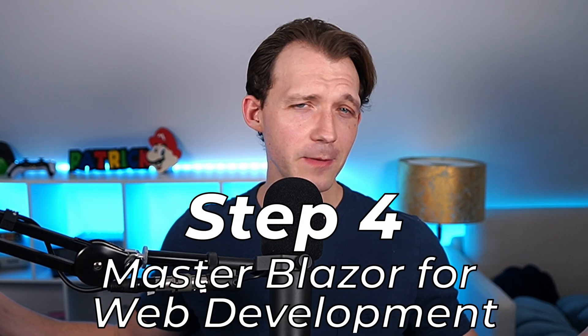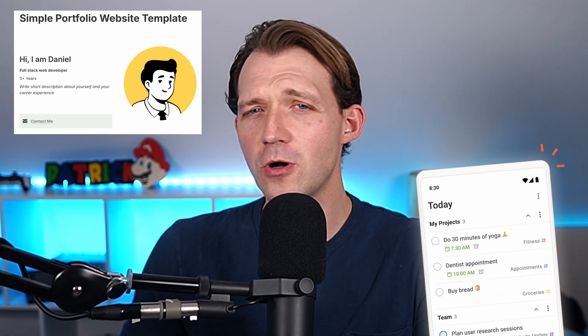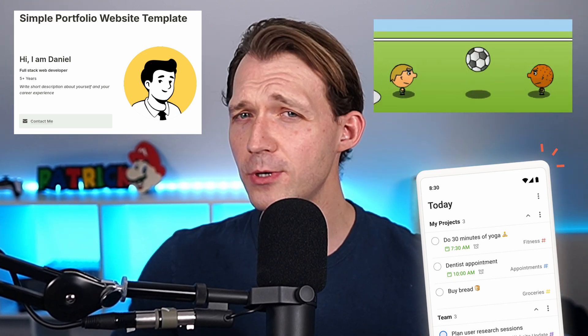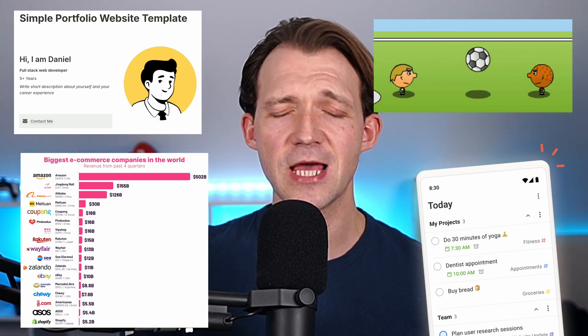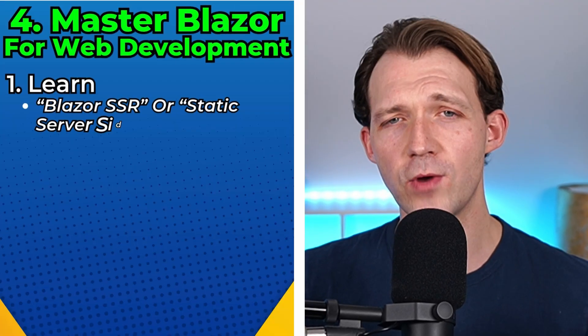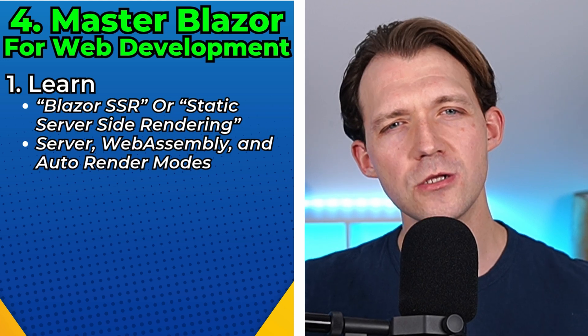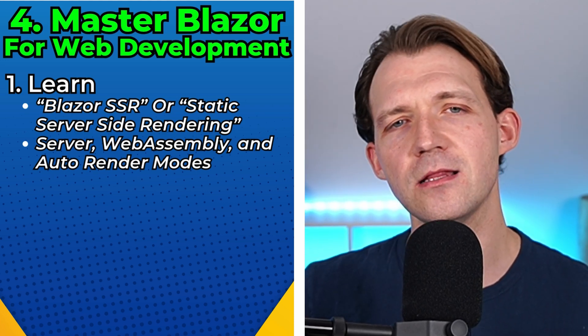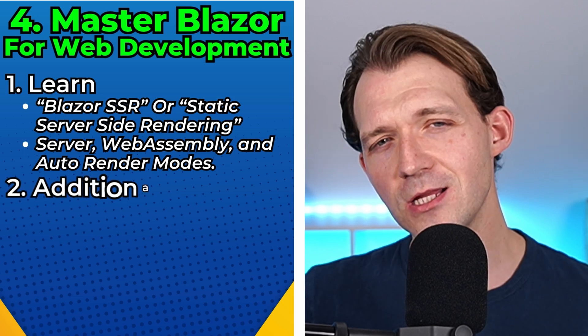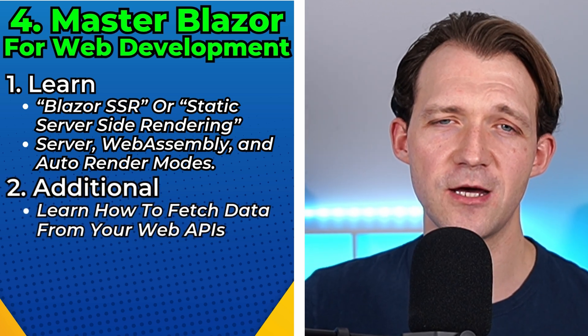Step four is Blazor — maybe my favorite one together with .NET web APIs. Blazor is a powerful tool for building interactive web applications. With Blazor you can build a simple portfolio page, a small to-do list single-page application, full-fledged browser games, or even big e-commerce apps — anything is possible. Start by learning Blazor SSR, or static server-side rendering, and then dive deeper into the server, WebAssembly and auto render modes. You'll learn to create reusable components, handle user interactions, and fetch data from your web APIs. Blazor lets you build full-stack apps using just .NET.